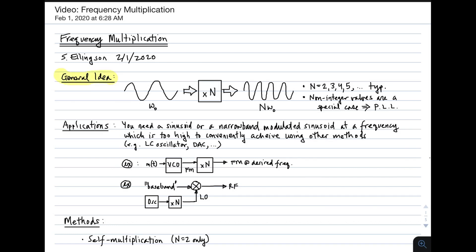First, the general idea. The general idea simply is that we have some sinusoid, or some narrowband modulated sinusoidal carrier, and it's at a frequency of omega naught. And what we desire is a copy of this thing, but which has been scaled up in frequency by a factor of n. So this is the frequency multiplier.